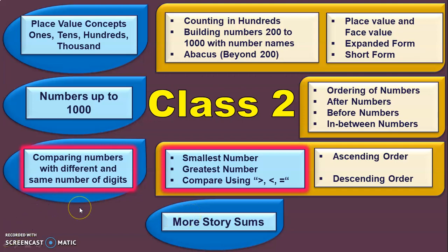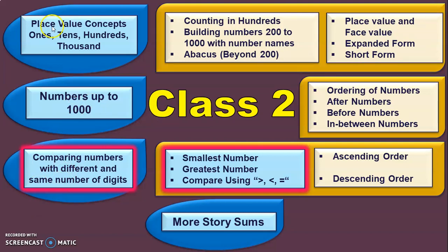I have mentioned the word 'more' here because in the first phase where we dealt with numbers 100 to 200, children were introduced to the concept of story sums. I have explained each of these learning outcomes in detail in my class 2 learning outcome video, the link for which is given below in the description box and also in the iCard section. Links for all related videos are also given in the description box with proper naming conventions and are linked in the iCard section.